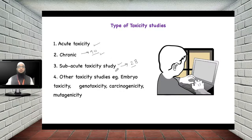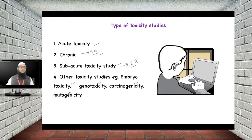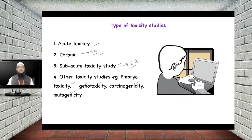In addition to these, there are special types of toxicity studies such as embryo toxicity (conducted in rabbits, rats, or zebrafish), genotoxicity study, carcinogenicity study, and mutagenicity study. Depending on the nature of the drug, the type of chemical, and data available from structurally related compounds, you decide which studies are needed.